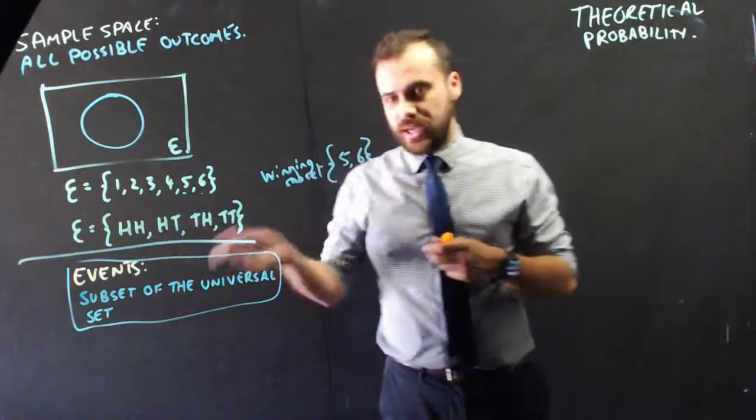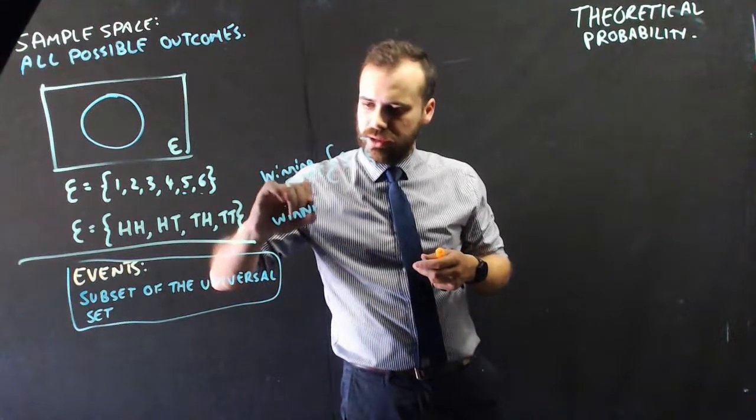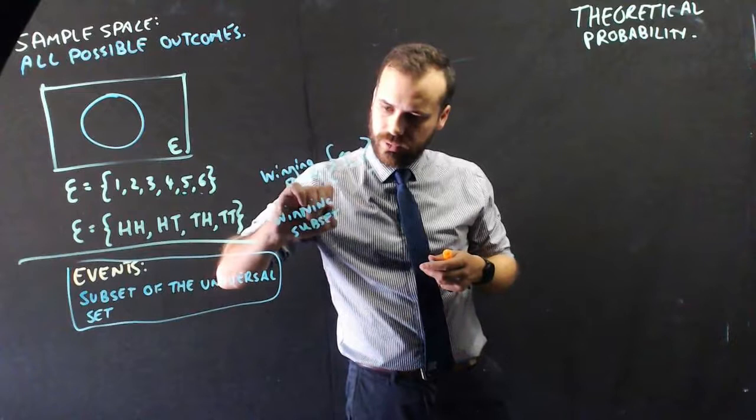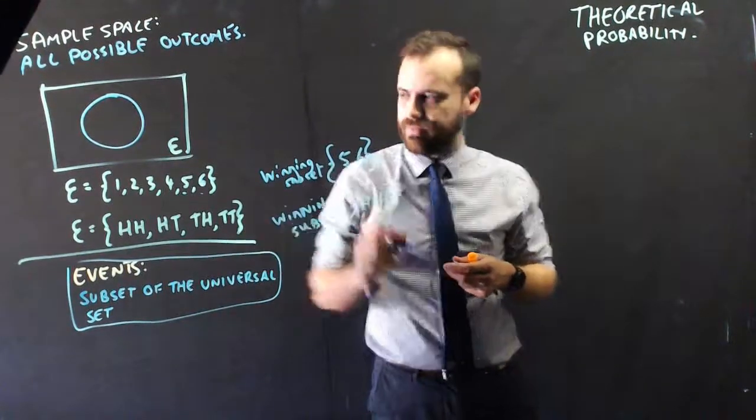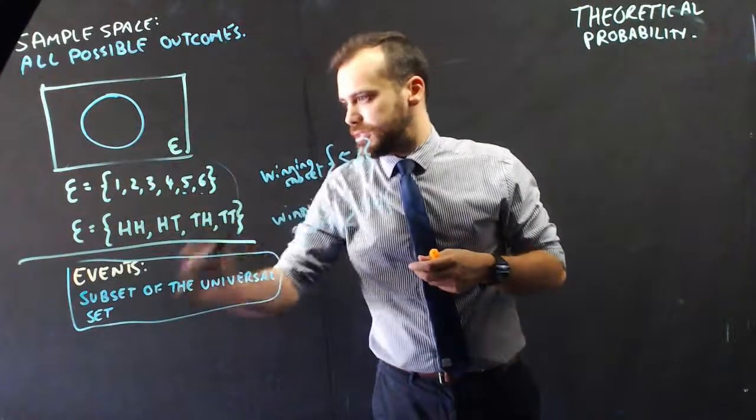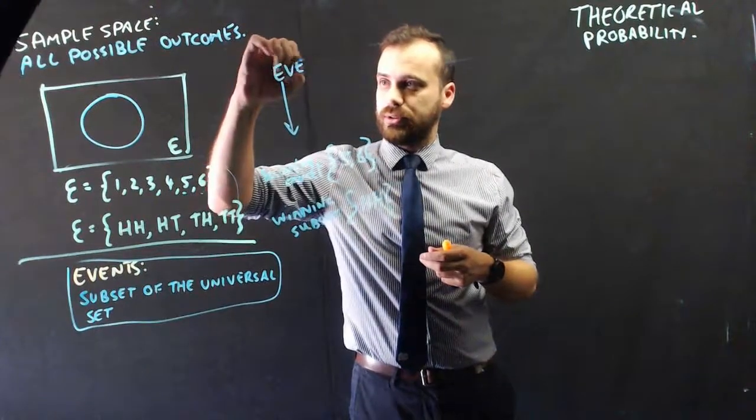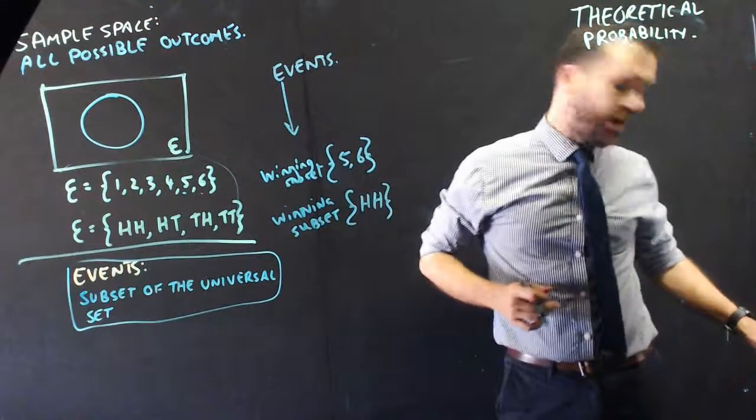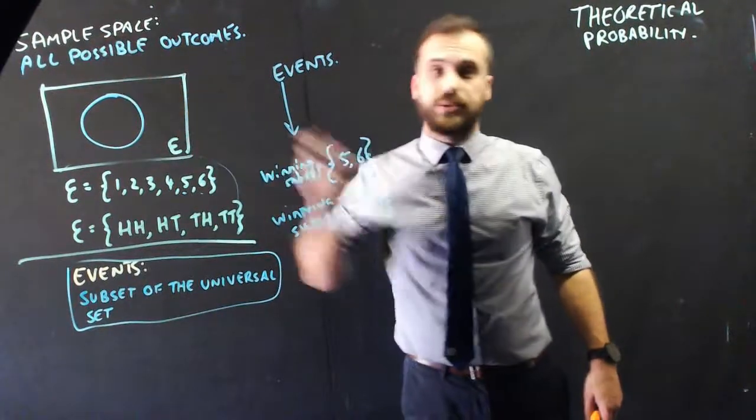Or, if you're playing this game with coins, then the winning subset might only be head-head. So, these are sample spaces, whereas these are called events. And an event is a subset of a sample space.